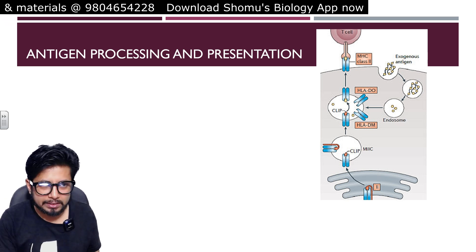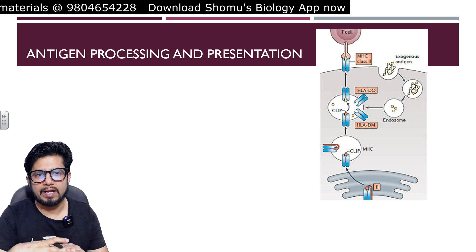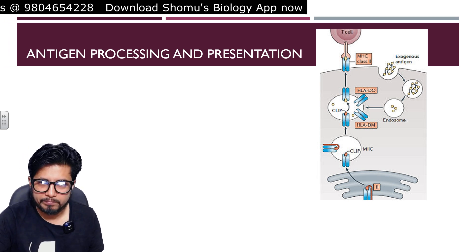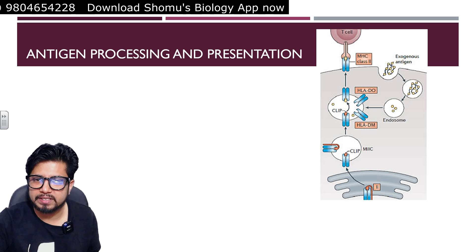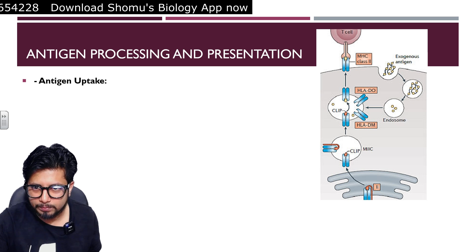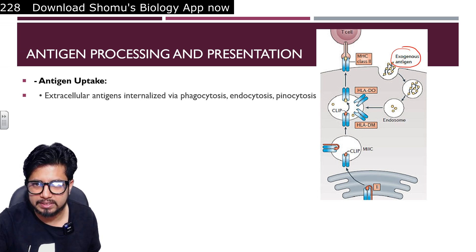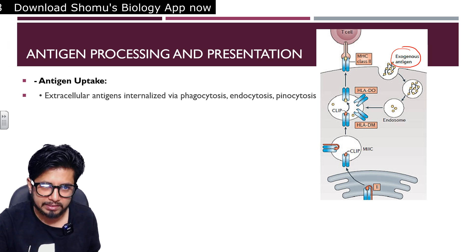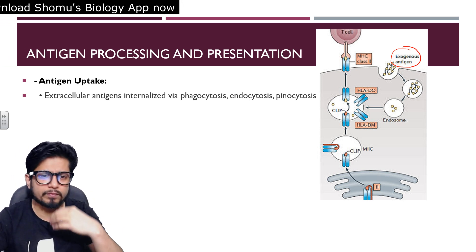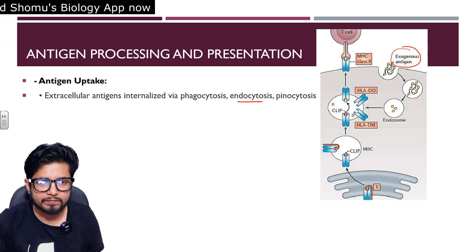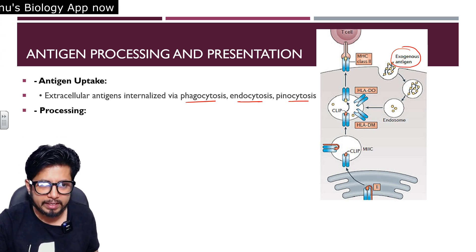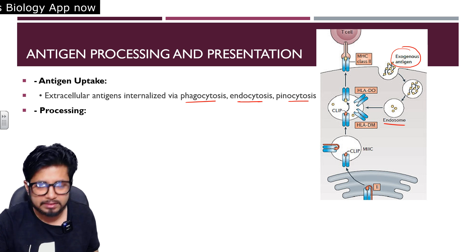Now, how exactly is the antigen presentation process done by MHC class 2? First is antigen uptake. The exogenous antigen — an extracellular foreign material such as a pathogen or pathogenic fragment — is engulfed by endocytosis, phagocytosis, or pinocytosis. After engulfing, an endosome is formed and processing begins.